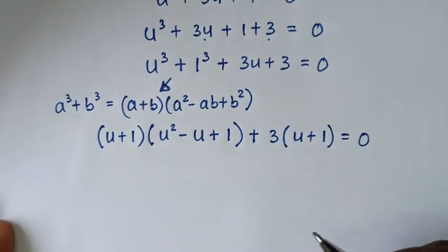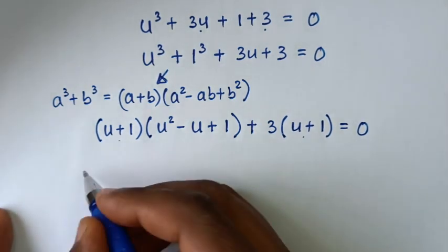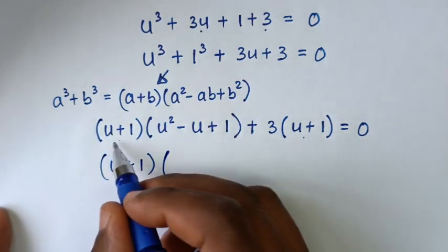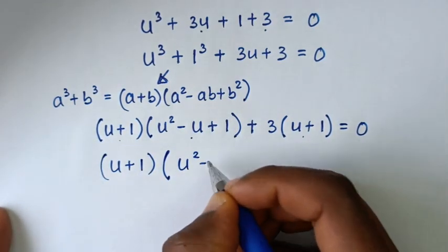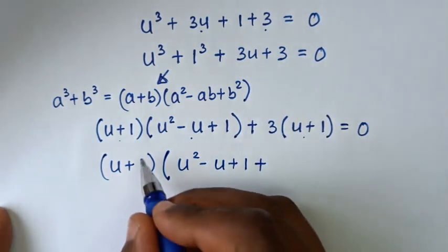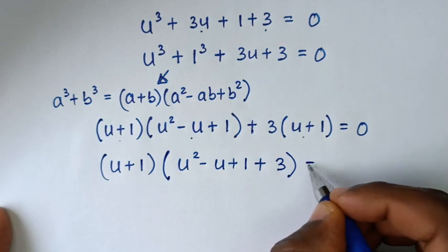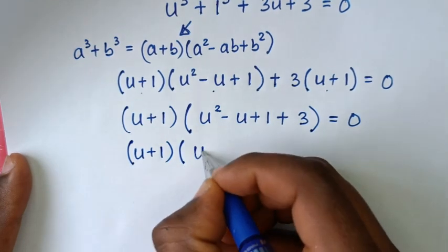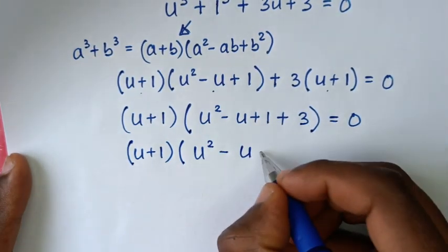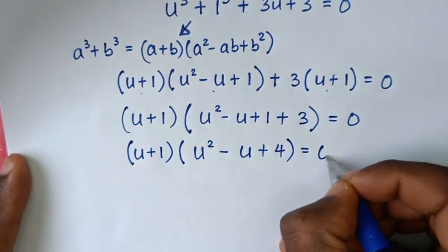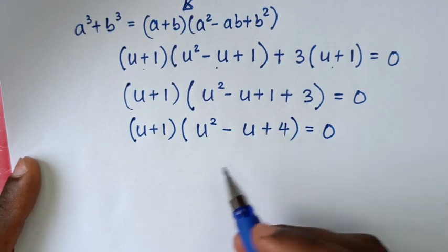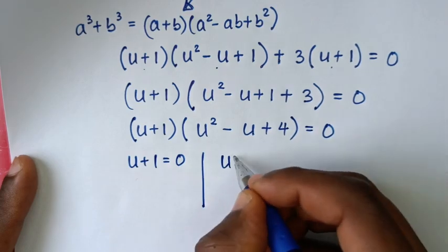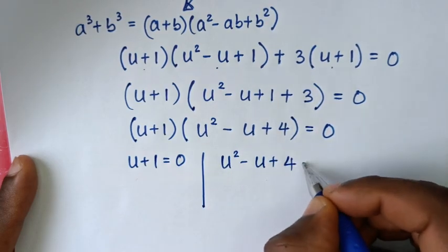Factoring out (u + 1), we get (u + 1)(u² − u + 1 + 3) = 0, which simplifies to (u + 1)(u² − u + 4) = 0. This gives two solutions: u + 1 = 0, or u² − u + 4 = 0.